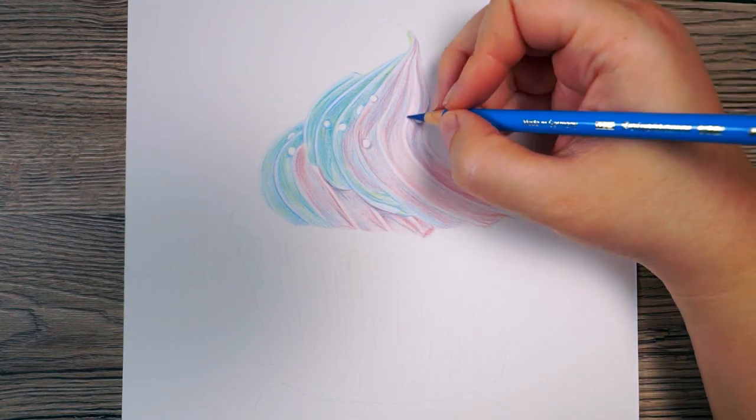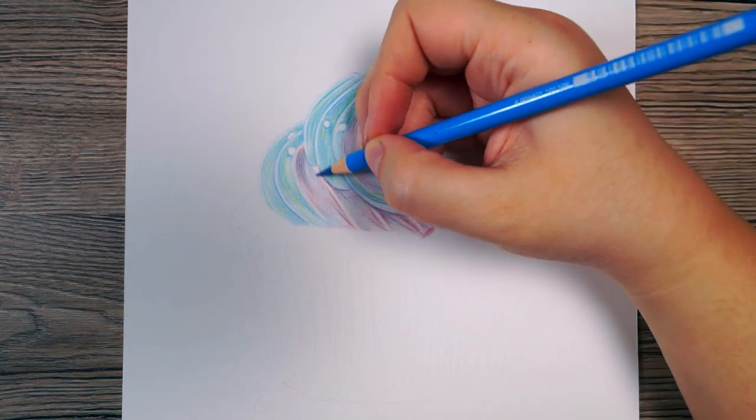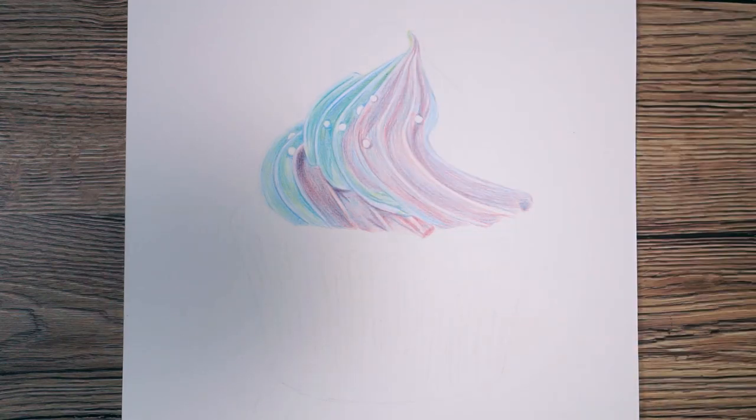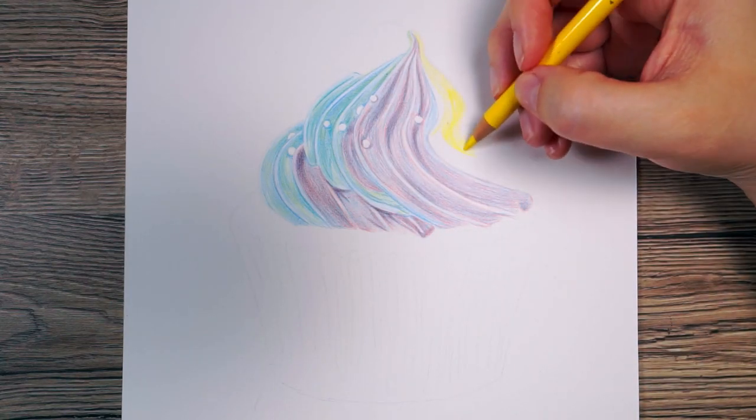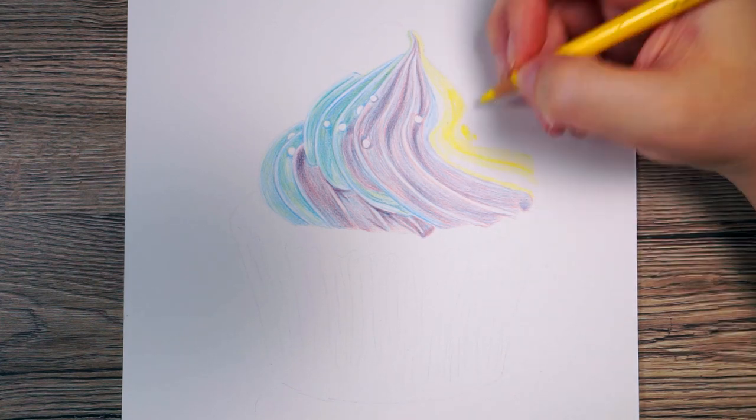Now I thought it would be easiest to roughly mark out the whole icing area first, and then I could go back and add any extra details at the end. The yellow was much easier because I do have a yellow pencil, so I didn't actually have to do any mixing for this area.